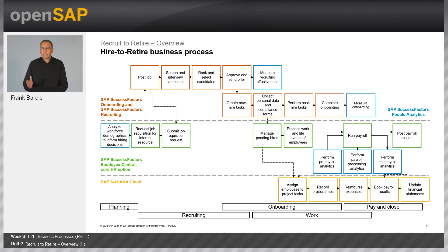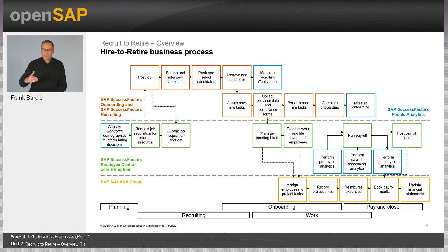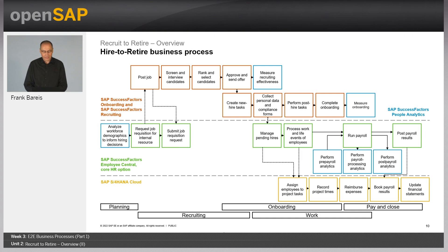The employee needs to be paid, so we need to run payroll — again with analytical capabilities, pre-payroll and post-payroll analytics. And in the end, the payroll results are handed over to finance. Integrating with S4HANA finance, we book the payroll results, book project expenses, and handle the month-end, quarter-end, and year-end closings in finance.